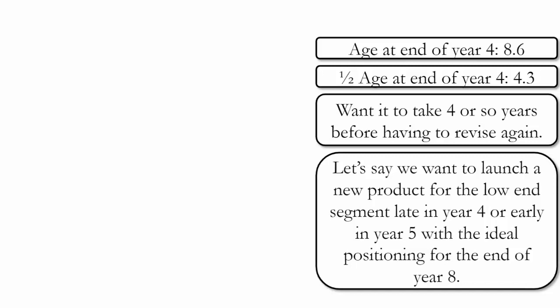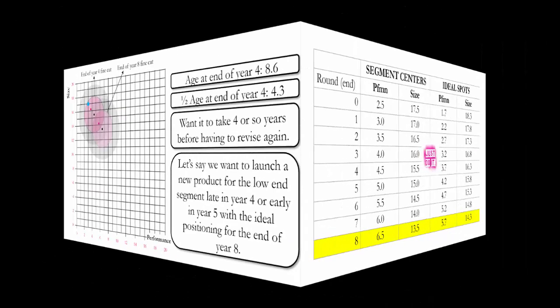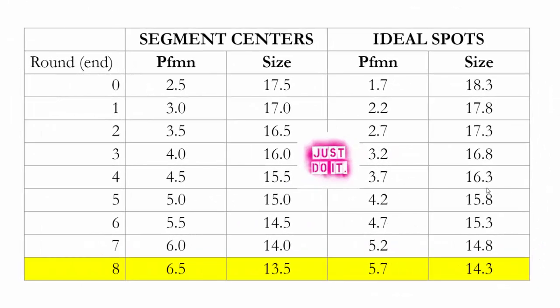What we could do is take the ideal position at the end of round eight as our target. We would need to do a revision project that moves our current product close to the ideal spot at the end of year eight. The ideal spot at the end of round eight is performance 5.7 and size 14.3. Currently, our product is at performance 3 and size 17 — that's quite a big move on the perceptual map. If it's such a big move, it may be that we need the product in R&D for longer than a year.